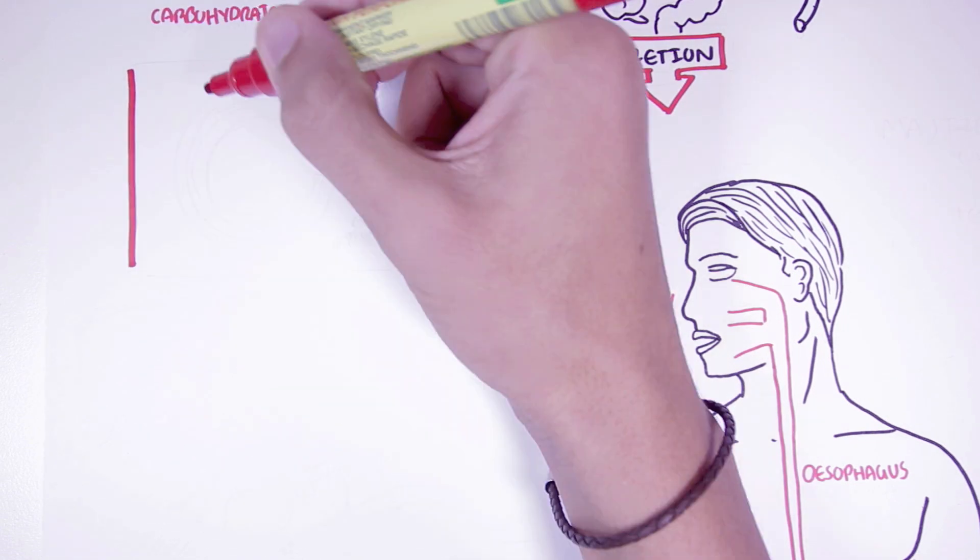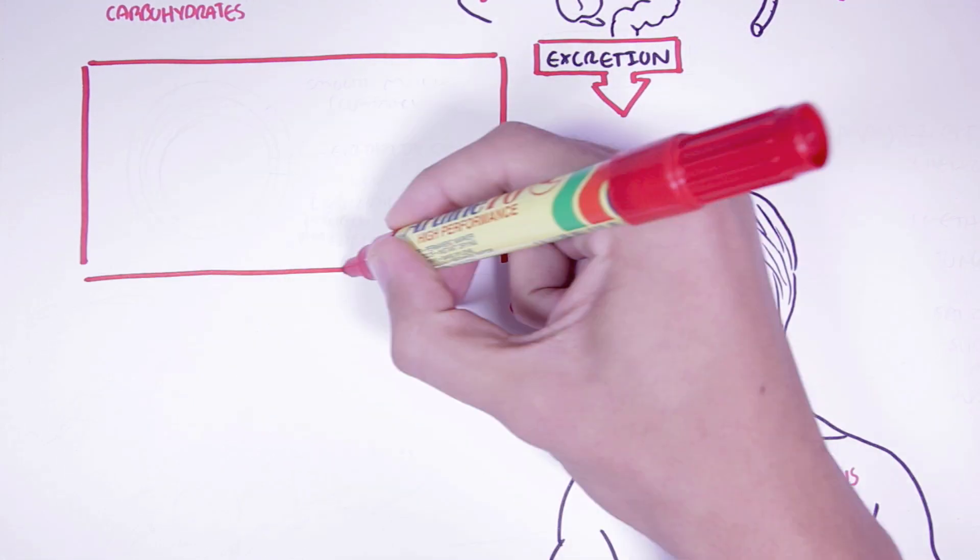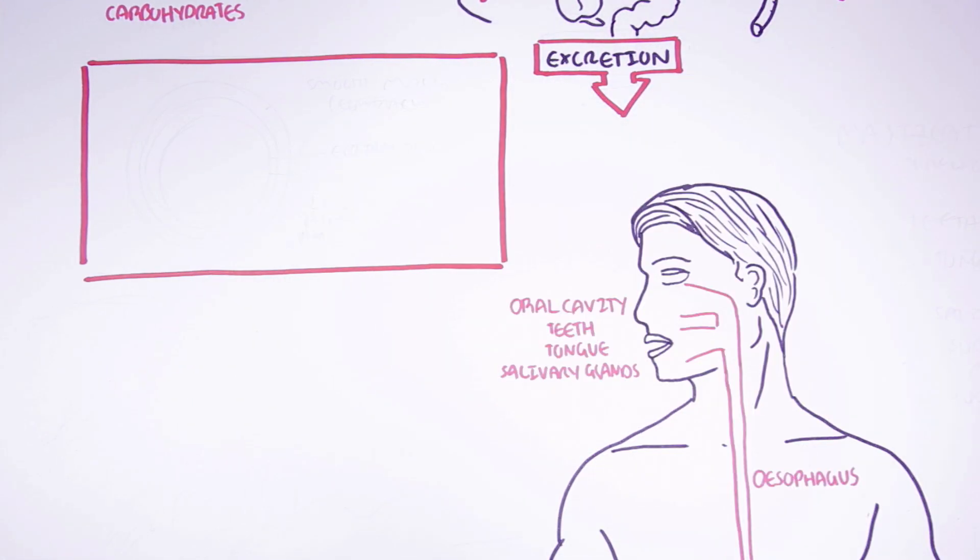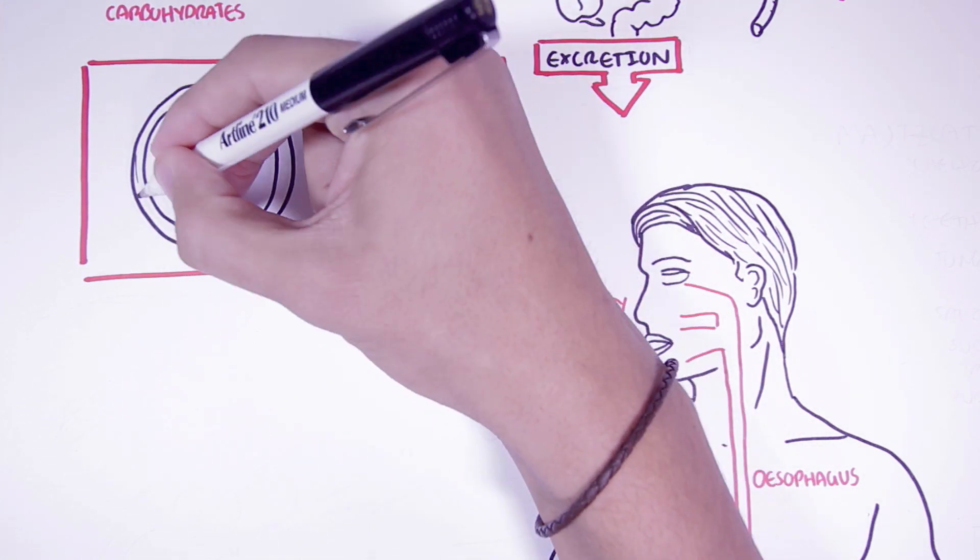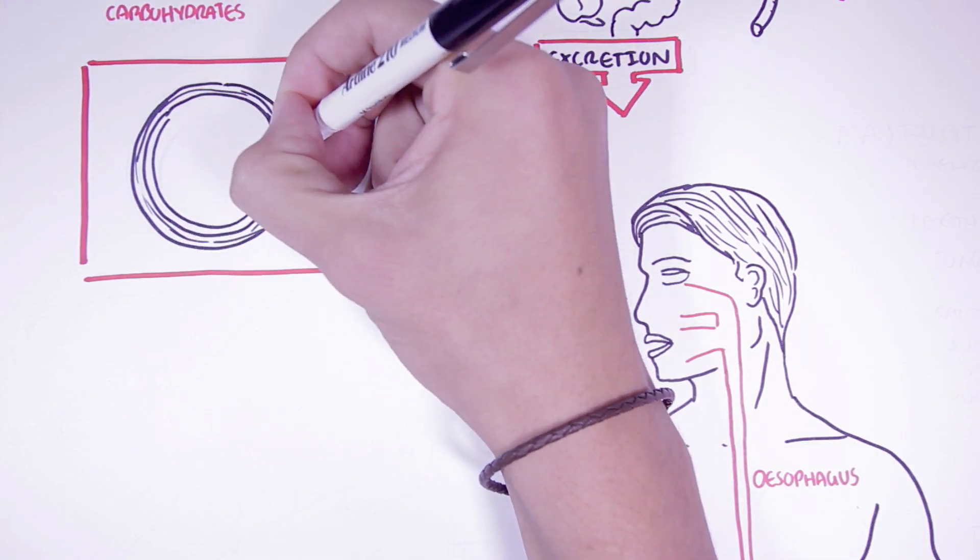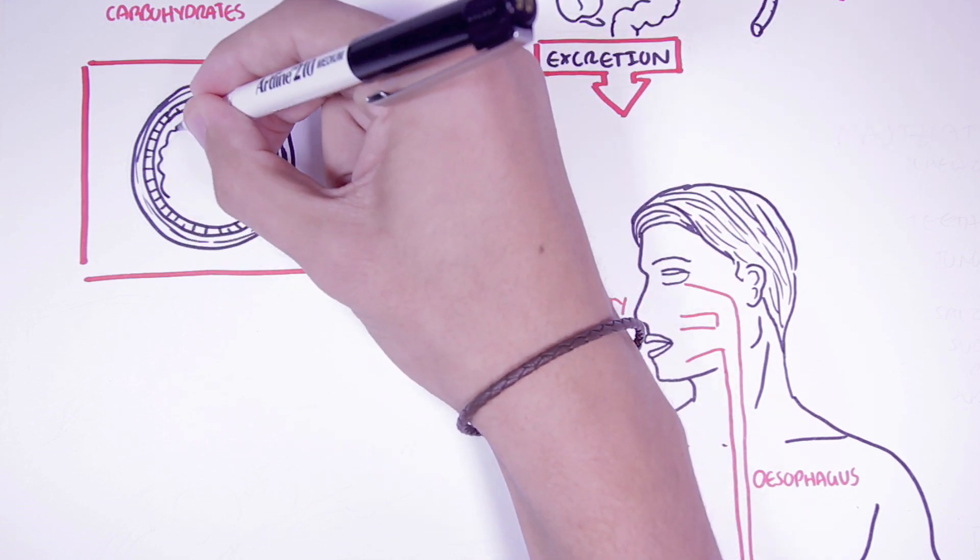Another fundamental point to take in is that the digestive tract all share three similar anatomical properties. Here I am drawing a diagrammatical cross-section representation of the digestive tract. The digestive tract have three main layers.